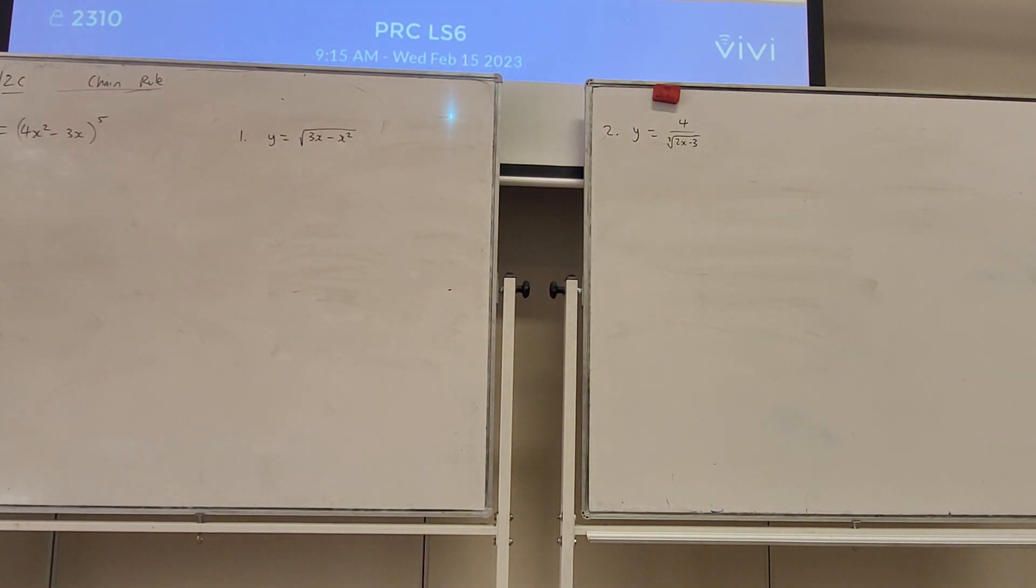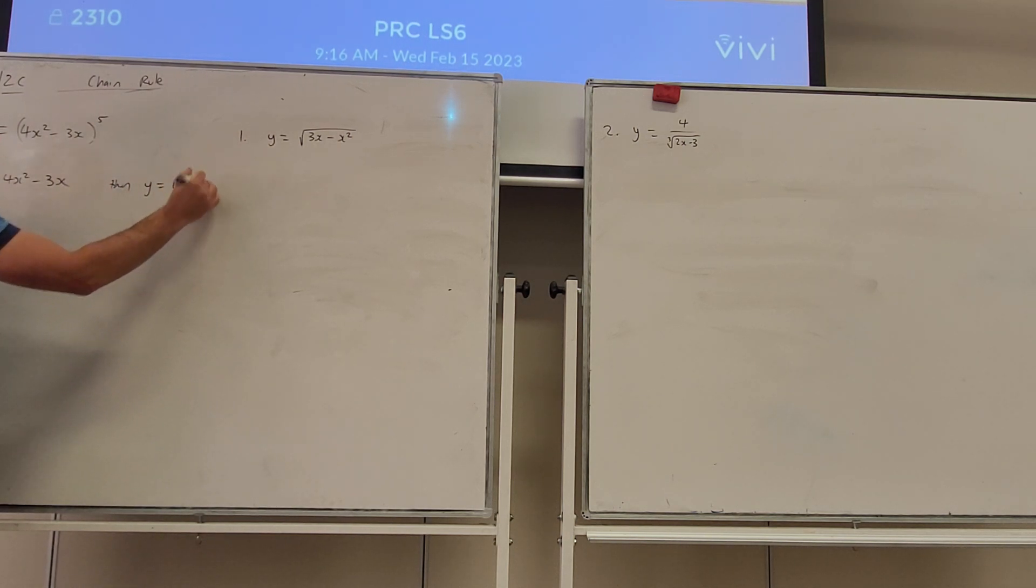What we're going to do is we're going to recognize this is two functions. One of them is going to be the function u. u is always going to be the function that is inside, inside function. So if we look at this, we've got 4x squared take 3x, that's our inside function. And if that is u, then y is equal to u to the power of 5. If this function is u, then y can be described as u to the power of 5.